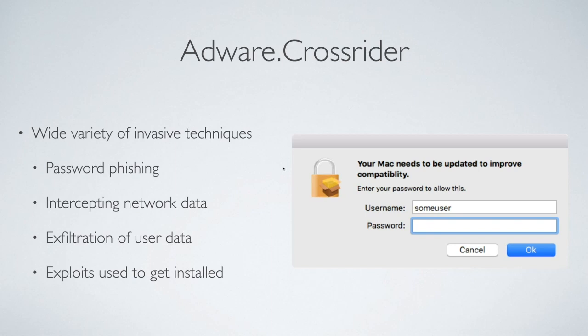Another very prominent adware we're seeing is called CrossRider. It's been around almost as long as Genio and is actually a lot more sophisticated. Some of the things CrossRider has done include password phishing, interception of network data, exfiltration of user data, and using exploits to get installed. We call it adware rather than malware mostly because of the timeline — Genio was using those exploits early on, so when we created the detections we used the malware prefix, but CrossRider didn't start doing that kind of stuff until later when we were already calling it adware.crossrider. We didn't want to change the name as it would mess with our telemetry data.